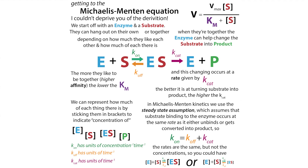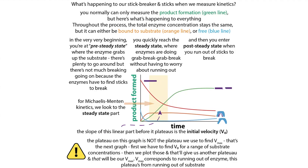You want to measure the velocity at the very beginning — not in the burst state where things are trying to find each other, but in the steady-state part — where the enzymes are doing grab-break-grab-break without running out of substrate. Then you enter the post-steady-state where you start to run out. We don't want to measure there; we want to measure in this linear range.